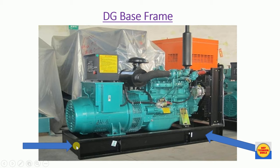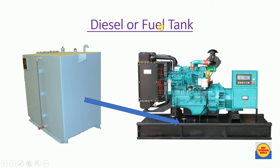Next is the DG frame, which supports the engine and alternator. After that is the diesel or fuel tank — this is the external tank where we can store the diesel. This is a horizontal diesel tank.